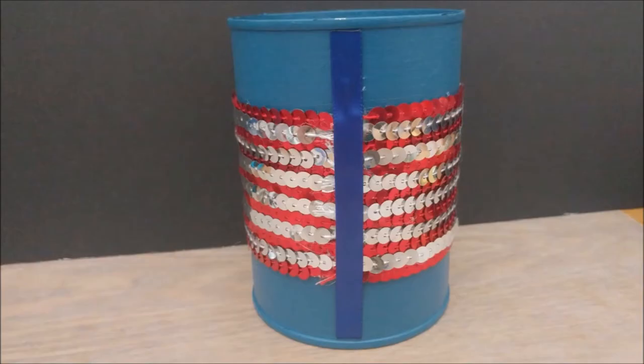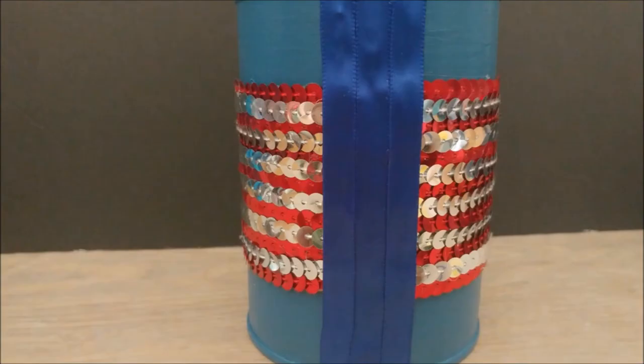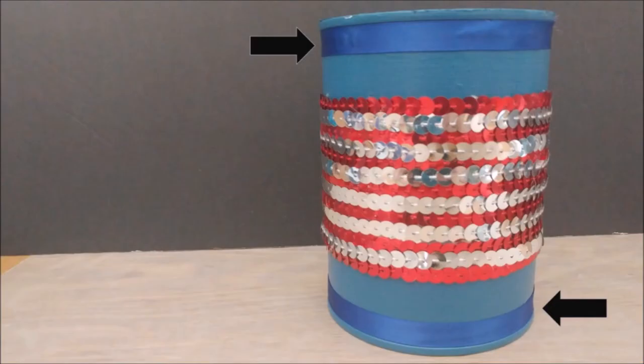And this is how it looks like with the first strip glued down and then the other two on either side of the first strip. This next part is optional, but what I did here was just put the strips of the blue ribbon around the top and bottom part of the tin like so.